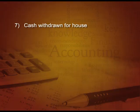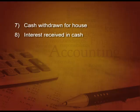Next: interest received in cash. Cash is coming in, so cash account debit. Interest is income, so it will be credited. The entry is: cash account debit, To interest account. Next: salary paid. Salary is an expense, so salary account debit, and cash is going out, so To cash — cash is credit.